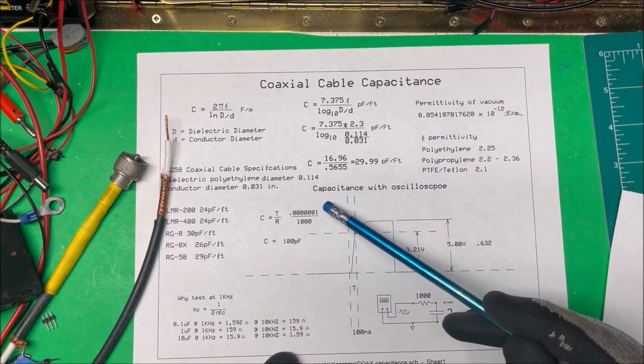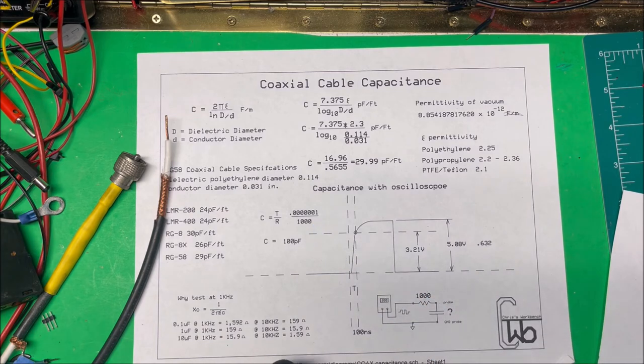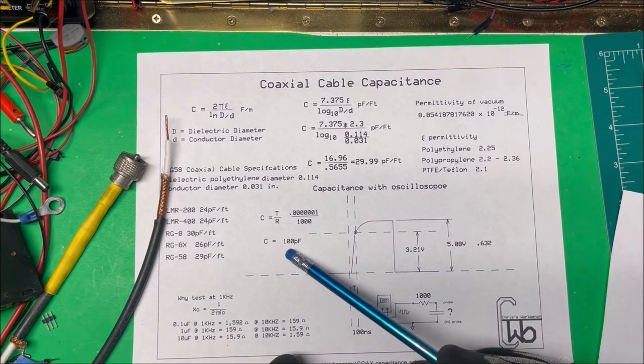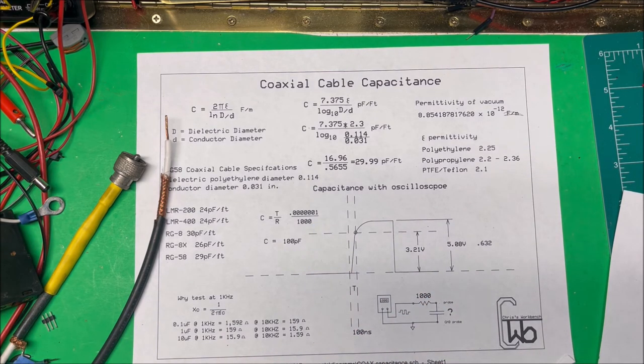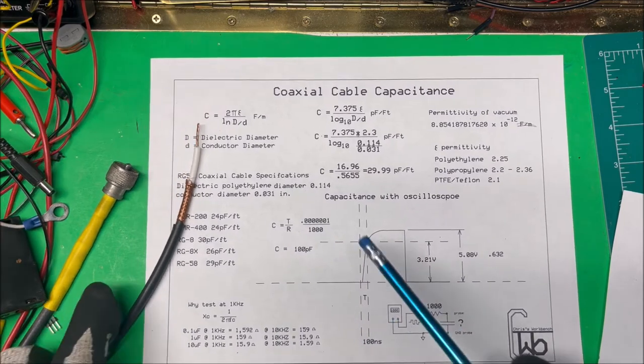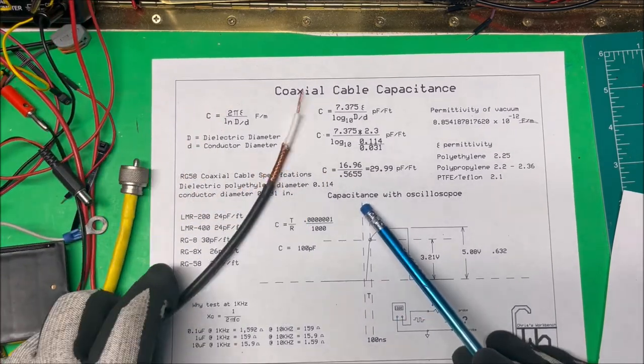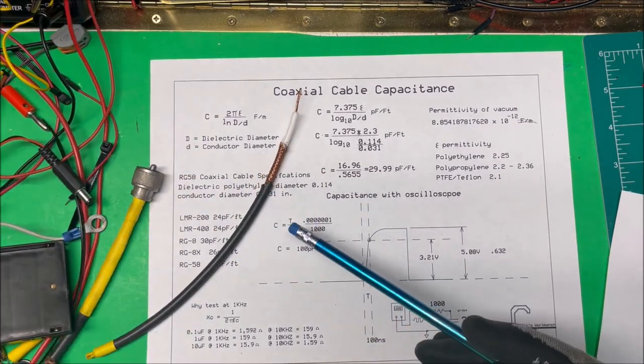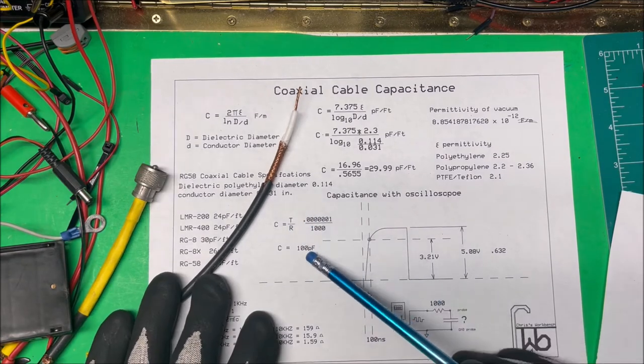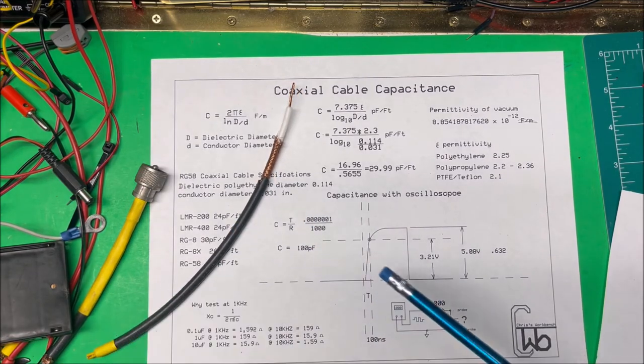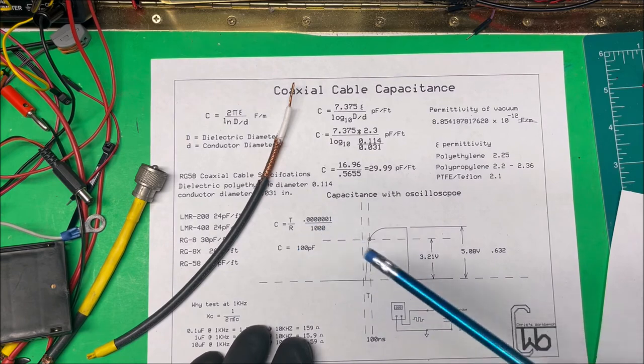So I take my 100 nanoseconds, divide it by my 1,000 ohms, and it comes out to 100 picofarads. I need 100 picofarad capacitor for the tennas I'm making, so I actually, I cut the cable to 100 picofarads, but it makes the math easier here.